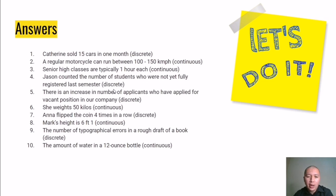Number four: Jason counted the number of students who were not yet fully registered last semester. Of course, it will be discrete because it pertains to headcount. We have to count the number of people who have not yet registered. Five: there is an increase in number of applicants who have applied for a vacant position in our company is discrete, also headcount. She weighs 50 kilos. This pertains to weight, so this is continuous.